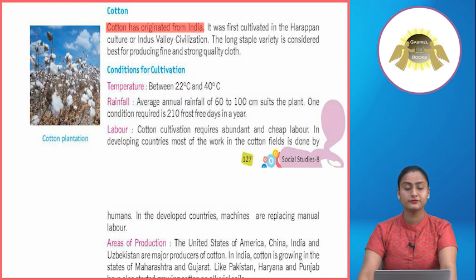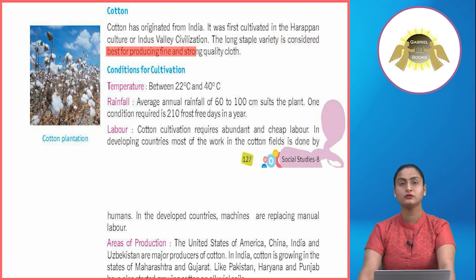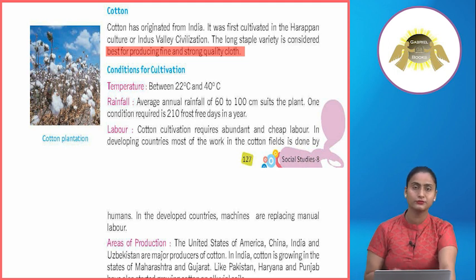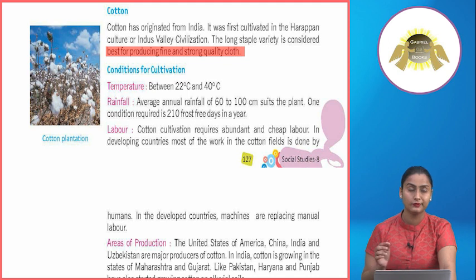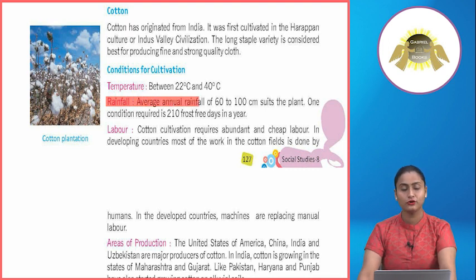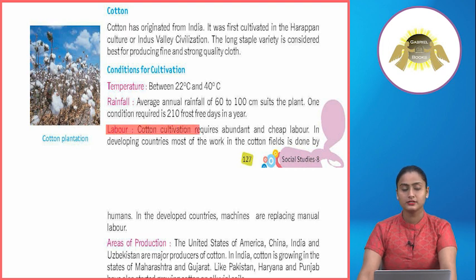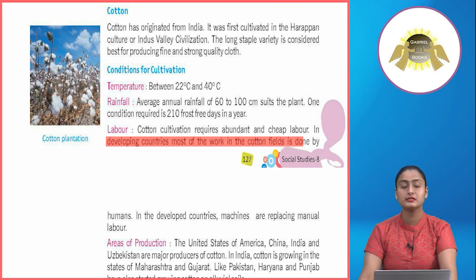Cotton has originated from India. It was first cultivated in the Harappan culture or Indus Valley civilization. The long staple variety is considered best for producing fine and strong quality cloth. Conditions for cultivation — Temperature: between 22 degrees Celsius and 40 degrees Celsius. Rainfall: average annual rainfall of 60 to 100 cm. One condition required is 210 frost-free days in a year. Cotton cultivation requires abundant and cheap labor.